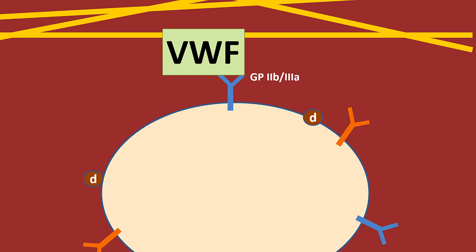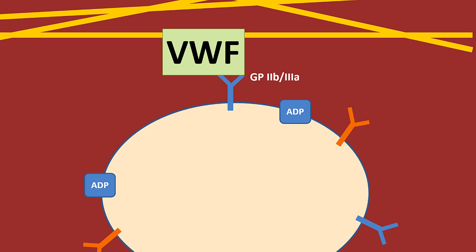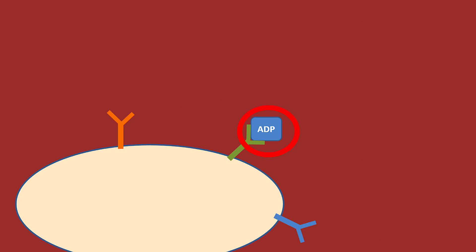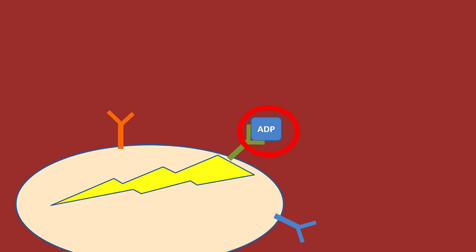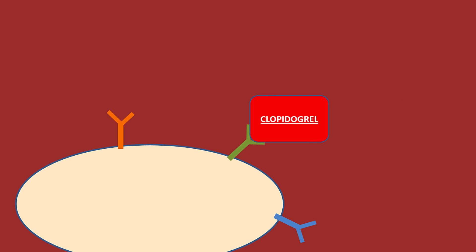The next drug we're going to look at is clopidogrel. ADP is released from the dense granules and binds onto receptors which activate the platelet. Clopidogrel simply blocks this receptor so the platelet can't be activated by the ADP.